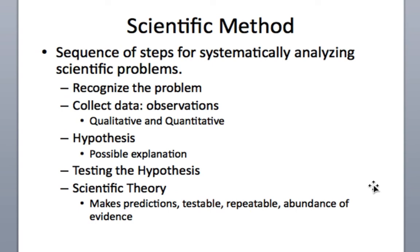The scientific method involves a systematic approach: recognize the problem, make observations — both visual and quantitative (numerical) ones — come up with hypotheses to explain the observed phenomena, then test them by running experiments. In lab one, we'll talk about dependent and independent variables — you vary the independent variable and observe what happens to the dependent variable. Scientific theories make predictions that are testable and repeatable, and are supported by an abundance of evidence.